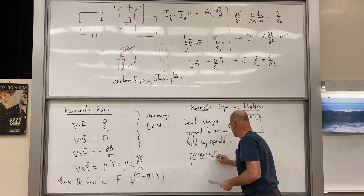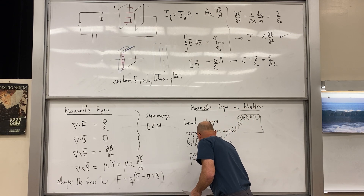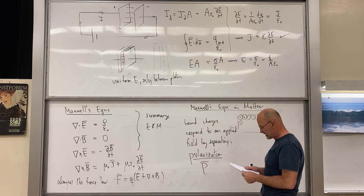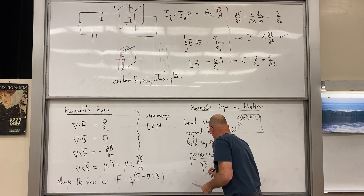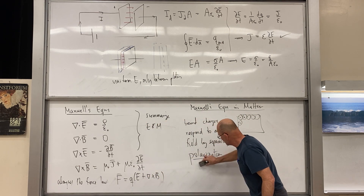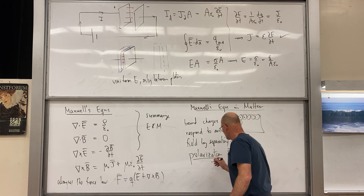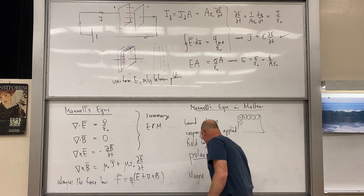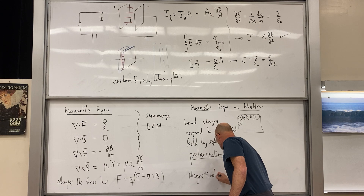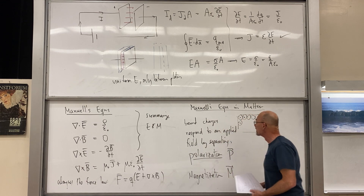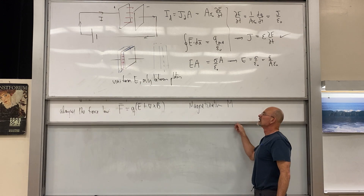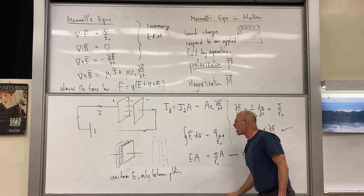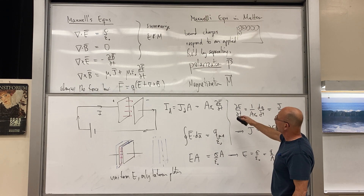Bound charges respond to an applied field by separating — that's what we call polarization. We also have magnetization M, which is more about orientation. These quantities — polarization P and magnetization M — are now material properties.